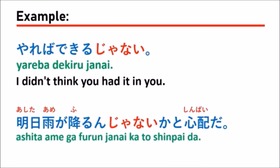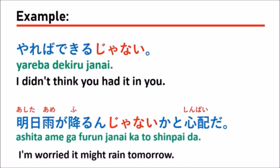The next example is: 明日雨が降るんじゃないかと心配だ — which means 'I'm worried it may rain tomorrow.' When you worry about tomorrow and you look around at the sky and the conditions, you can use this expression. You can also confirm with your friend, but in this case maybe your friend doesn't know either.